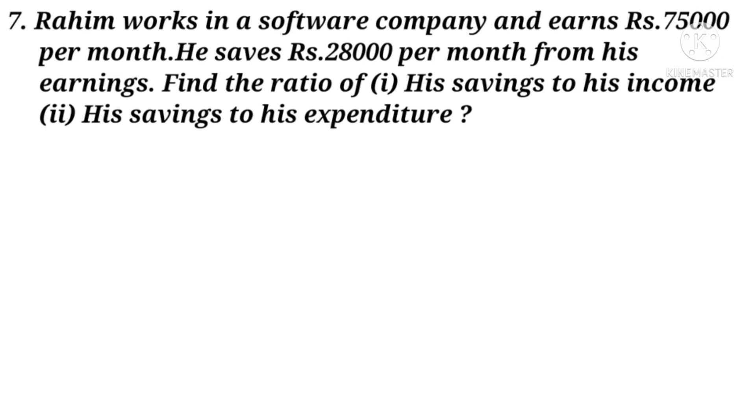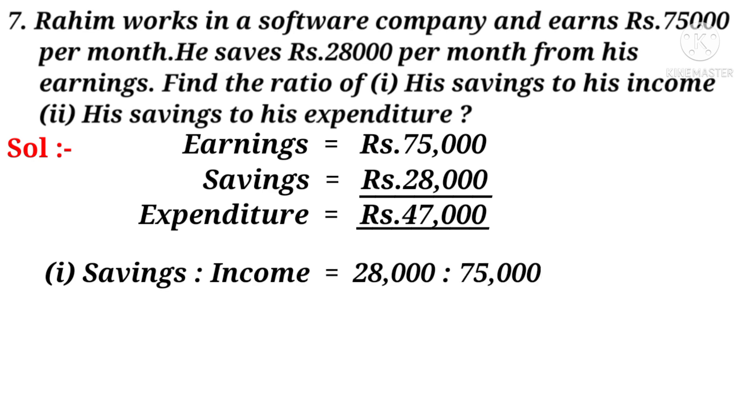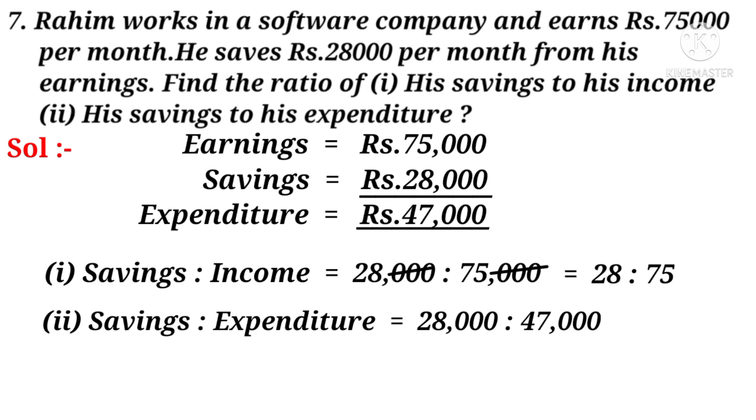Now 7th problem. Rahim works in a software company and earns 75,000 rupees per month. He saves 28,000 rupees per month from his earnings. Find the ratio of 1. His savings to his income, 2. His savings to his expenditure. Solution: Observe that the earnings are 75,000 and savings are 28,000. By subtraction, we get the expenditure is 47,000 rupees. Now savings to income is equal to 28,000 is to 75,000. On simplification by 1,000, we get 28 is to 75. Number 2: Savings to expenditure is equal to 28,000 is to 47,000. On simplification by 1,000, we get 28 is to 47.